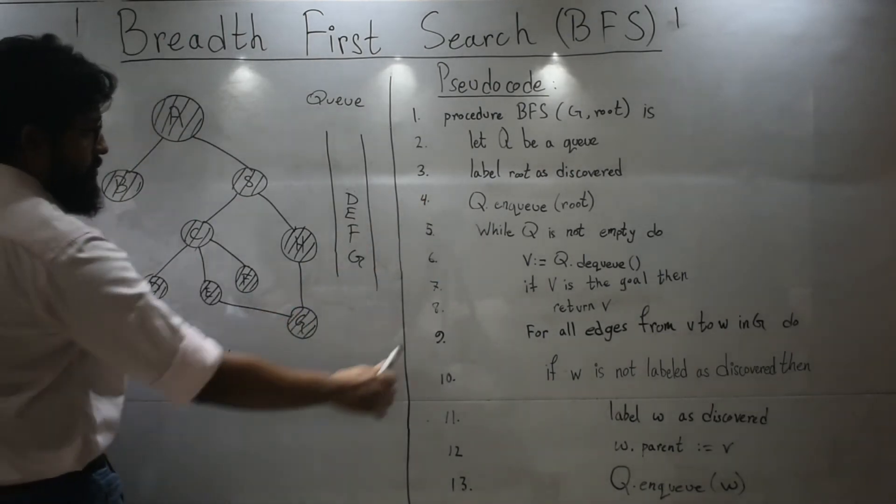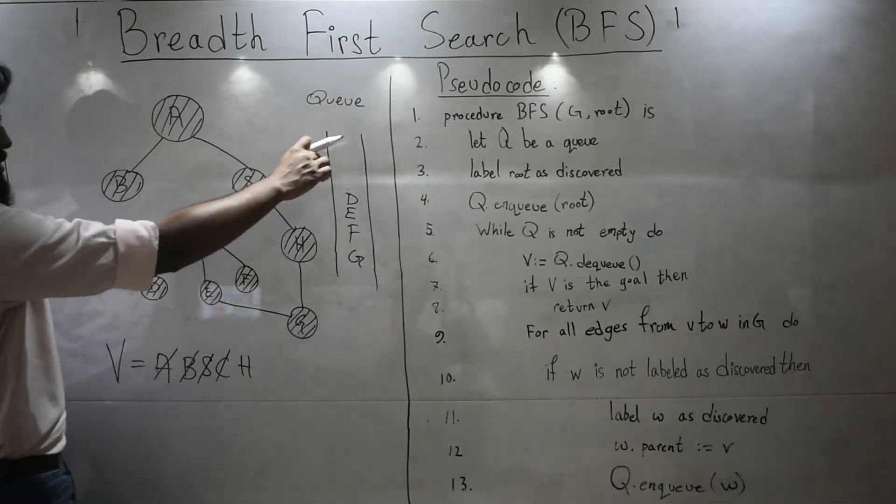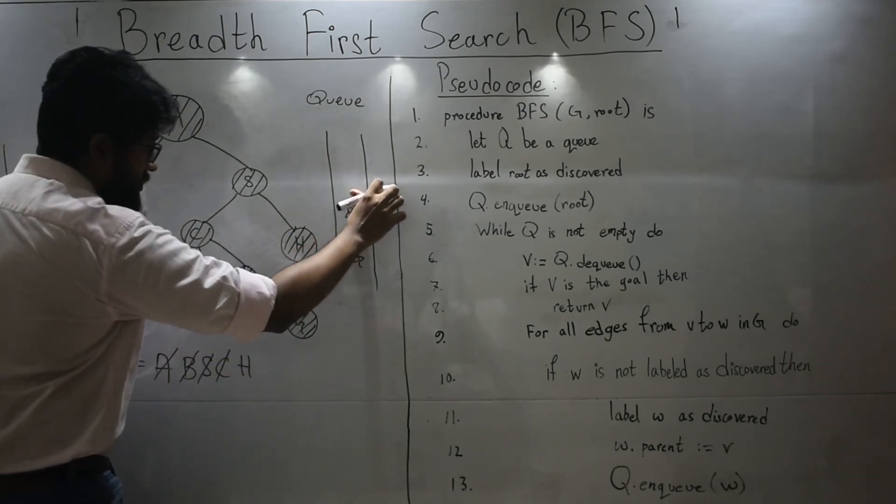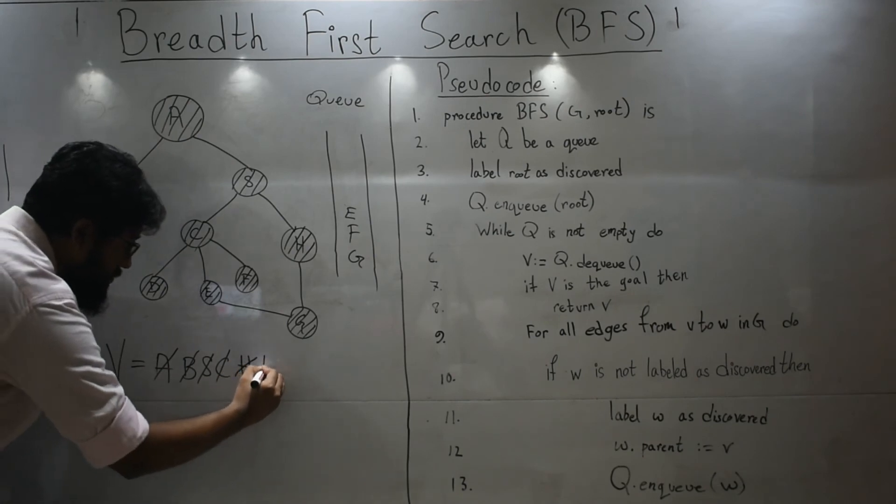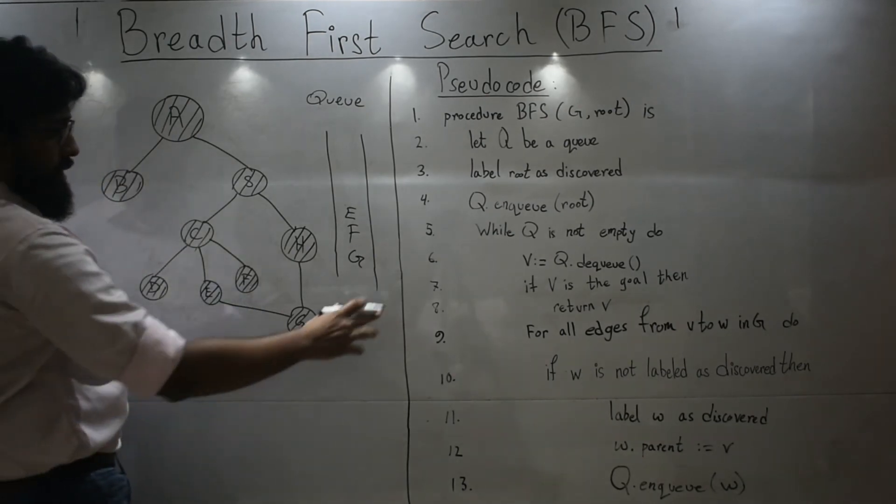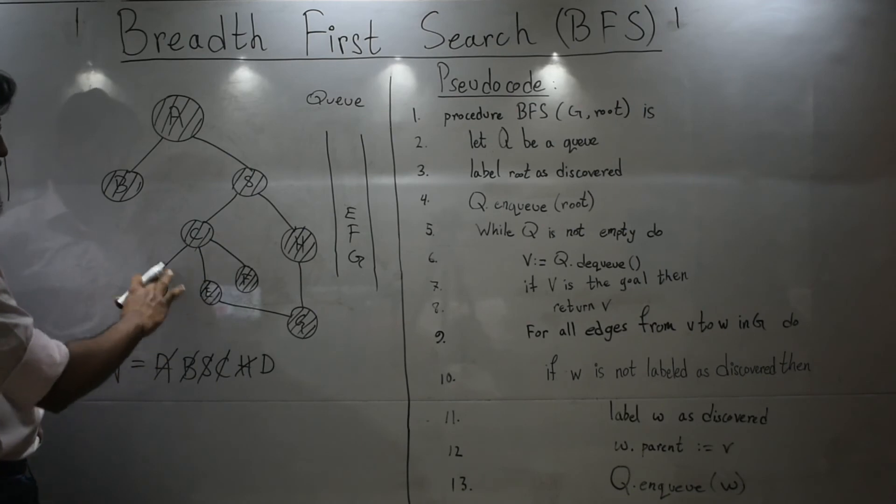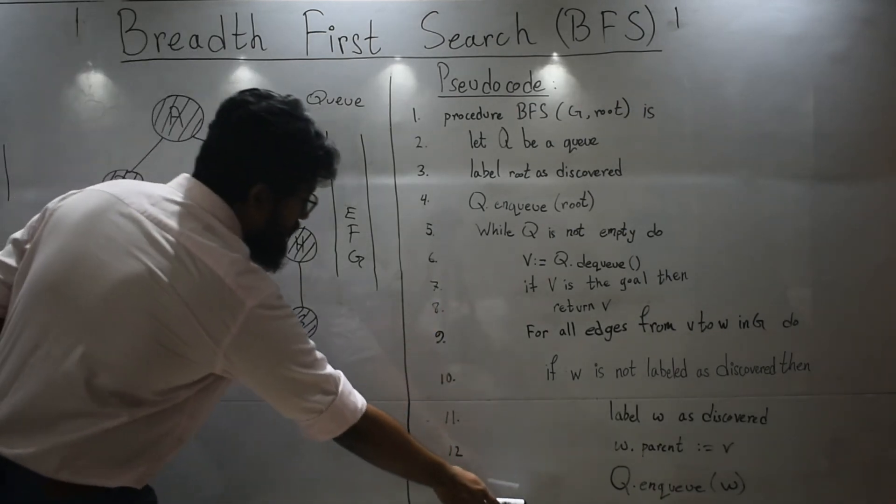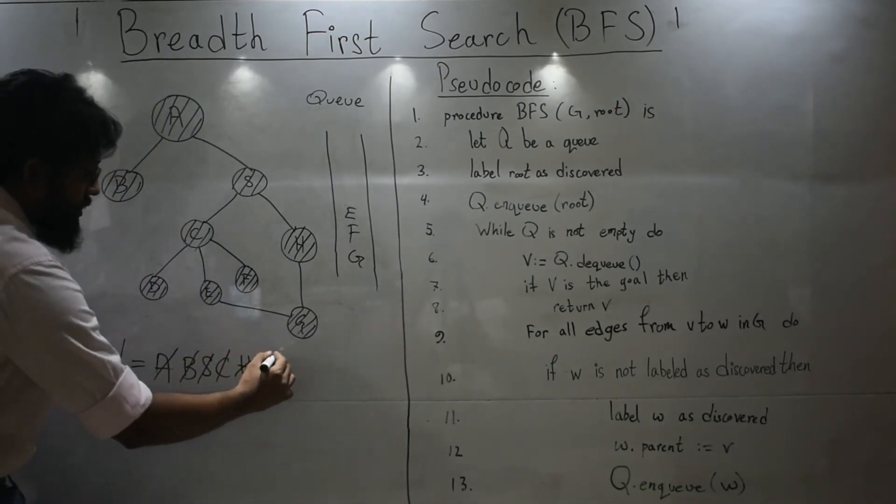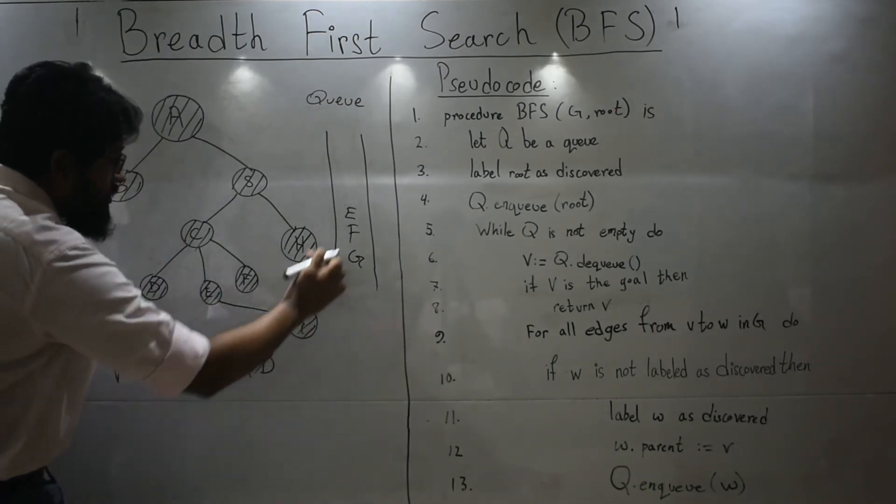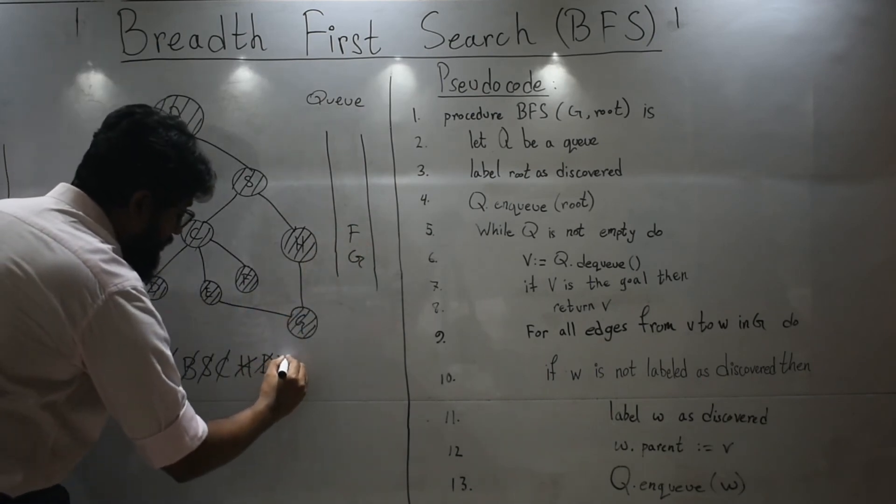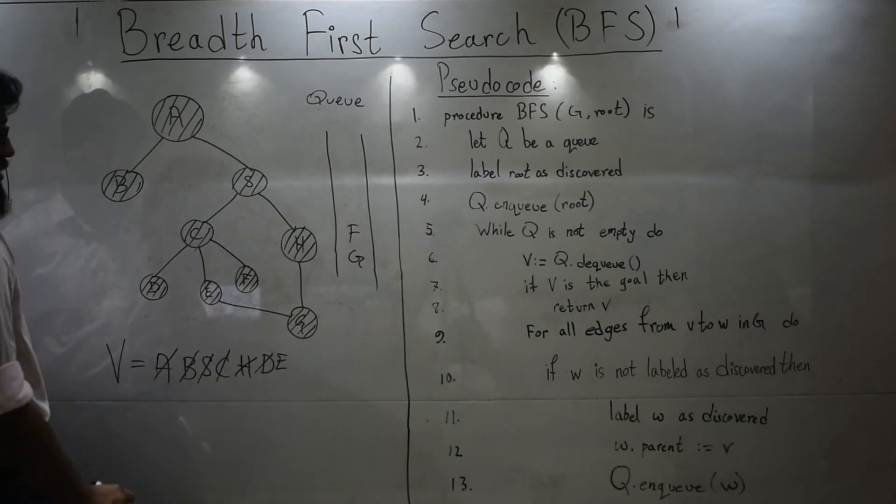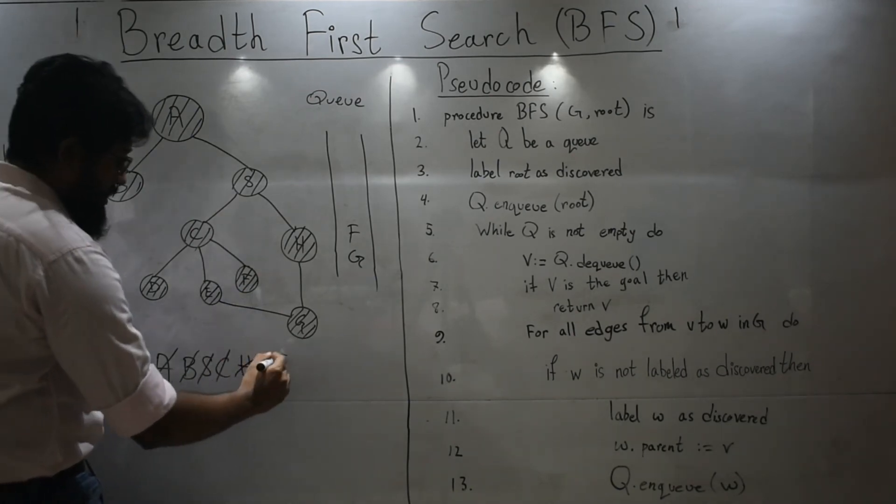Then we will again move to line number six and see what's on the top of my queue. Let's dequeue that. So D. And then does D have any other unlabeled, undiscovered nodes? No. So again it will skip all the nodes and come over here. Dequeue. Does E have any undiscovered nodes, neighbors? No. Dequeue.